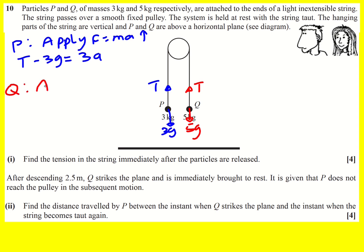And then for the other one Q, this one's going to move down. It just makes life a little bit easier if you make the correct direction positive. So it's going to accelerate this way and this one's going to accelerate that way. Okay the same magnitude.